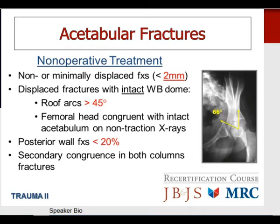If the roof arcs are greater than 45 degrees on the AP, obturator oblique, and iliac oblique images, the weight-bearing dome should be considered intact and the fracture appropriate for non-operative management. The femoral head must remain congruent with the intact portion of the acetabulum on x-rays taken with the patient out of traction. Small posterior wall fractures involving less than 20 percent of the posterior wall are also usually appropriate for non-operative management, as is secondary congruence in both-columns fractures.